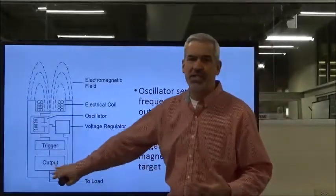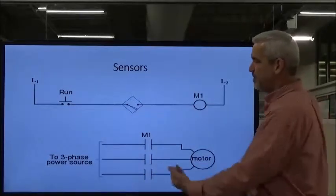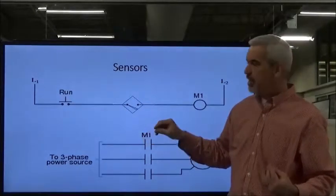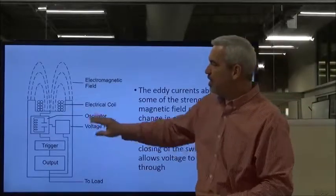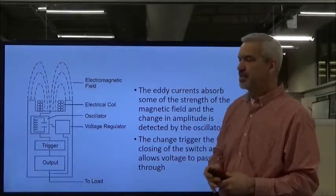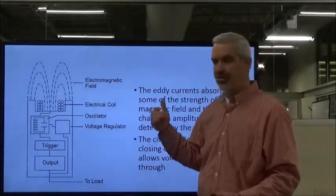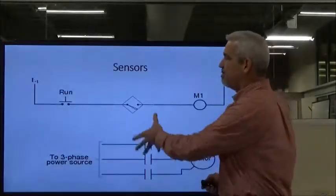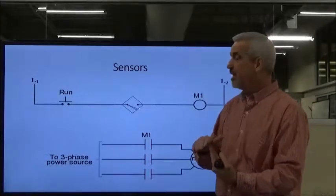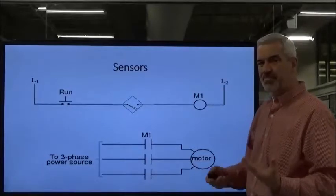That output signal is part of our control circuitry. We pass something in close proximity and the contacts close — not hard contacts like limit switches, but electronic microcircuitry that triggers an output. Once the target goes away, the oscillator strength goes back up, crosses the threshold, and the output signal is removed, opening the contacts back up. It could also be normally closed, opening the contacts when it senses metal — it can go either way.